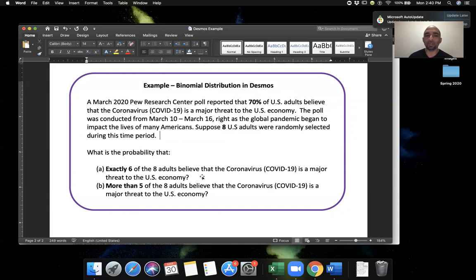So let's look at this in detail. The key things to use for Desmos is the number of trials, in this case, eight, and the probability of a success on each trial, which is 70%. Basically, there's a 70% chance that any of the adults selected say yes, they believe the coronavirus is a major threat to the US economy.